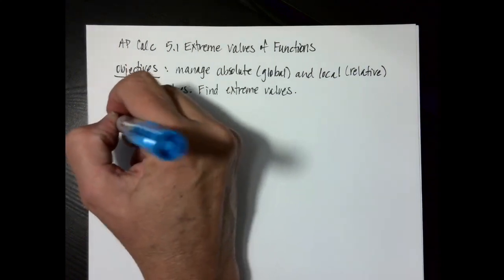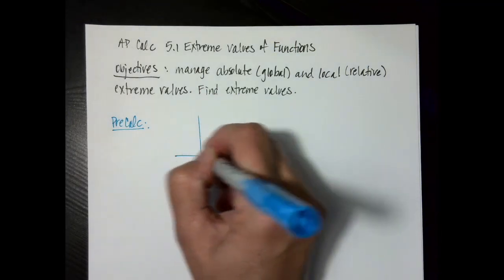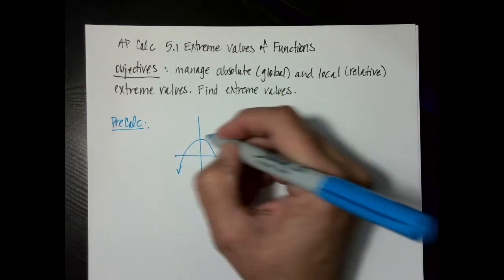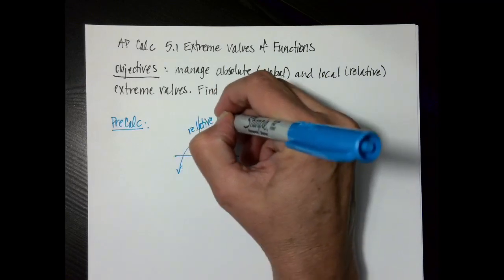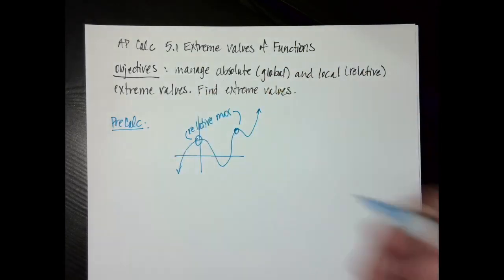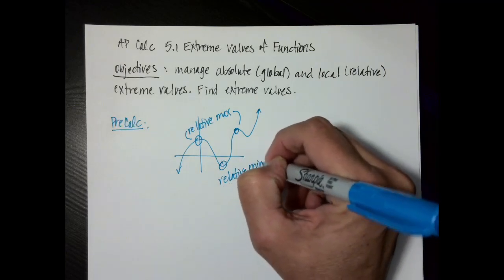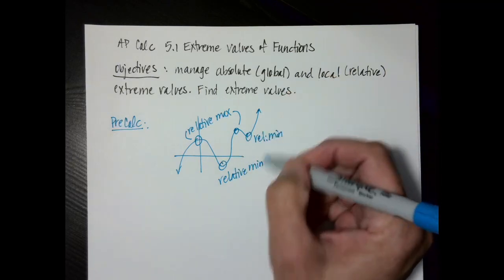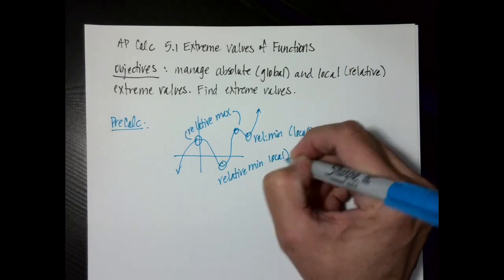Let's go back and talk about extreme values from a pre-calc standpoint. If we had some random function with some features, we would say this is a relative maximum, and this is also a relative maximum — so it happened twice. Then we would say this is a relative minimum, and this is another relative minimum. Sometimes 'relative' can also be called 'local' — those words are used interchangeably, and different books call them different things.